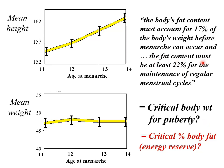The fat content must be at least 22% for the maintenance of regular cycles. But while the data fitted, people criticised the concept because nobody could understand how body fat could have an input in the control of puberty — there was no way the body could sense how much body fat it had, and there was no theory for this.